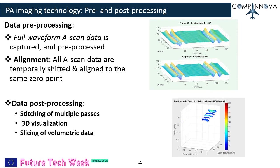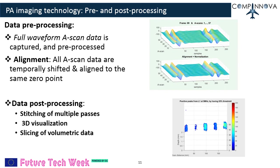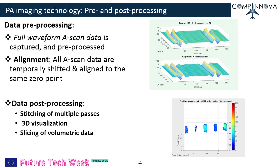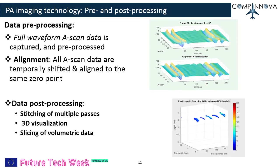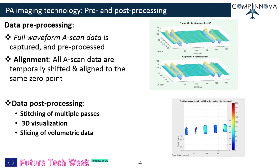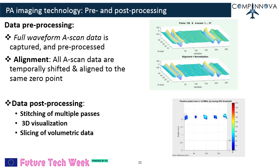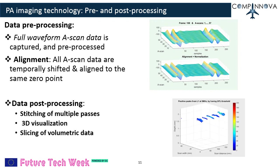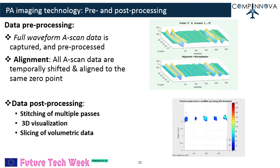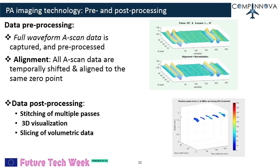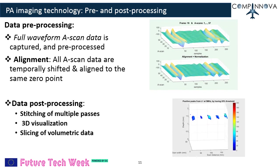Post-processing routines were programmed for improved 2D and 3D visualization. The PA hardware captures full waveform A-scan data, which can be pre- and post-processed using the developed routines. Due to non-uniform pressure and surface undulations, the arrival time of echo signals from a few A-scans can be delayed. This delay can be compensated by alignment, where all A-scans are temporally shifted and aligned to the same zero point of the start of the front surface echo. Post-processing features like slicing of volumetric data and 3D visualization can also be performed.